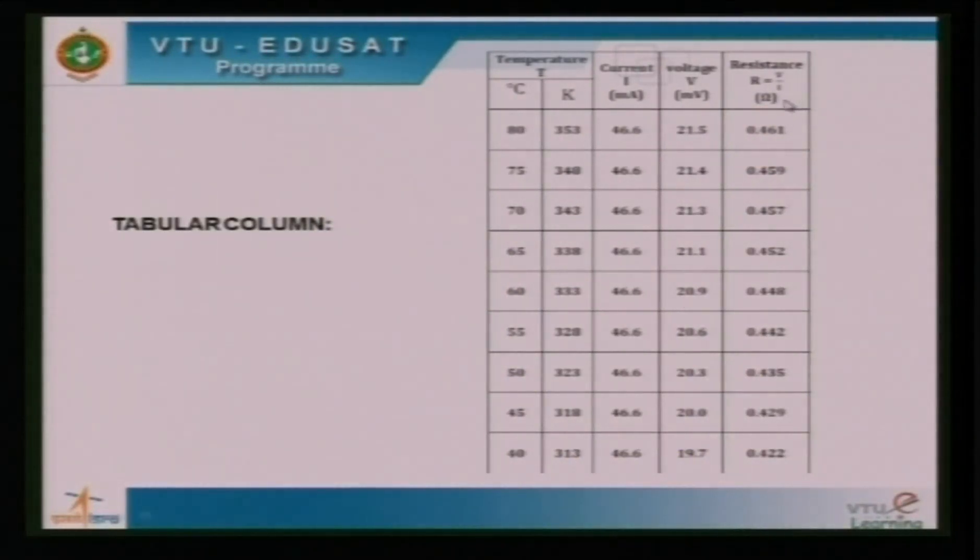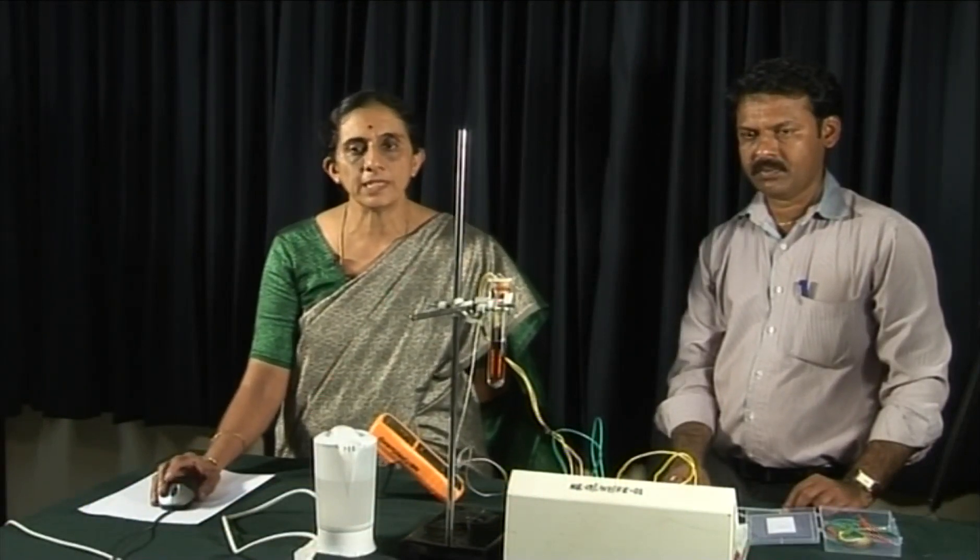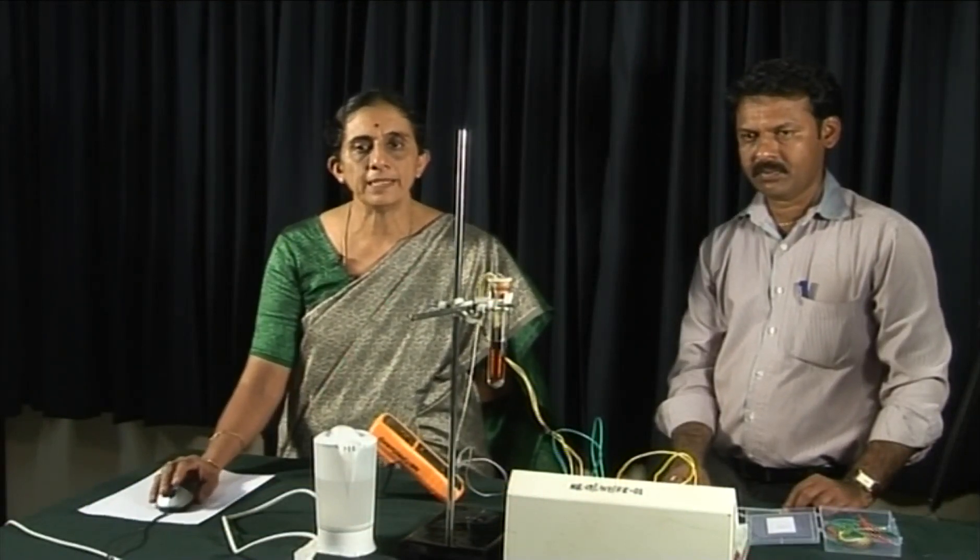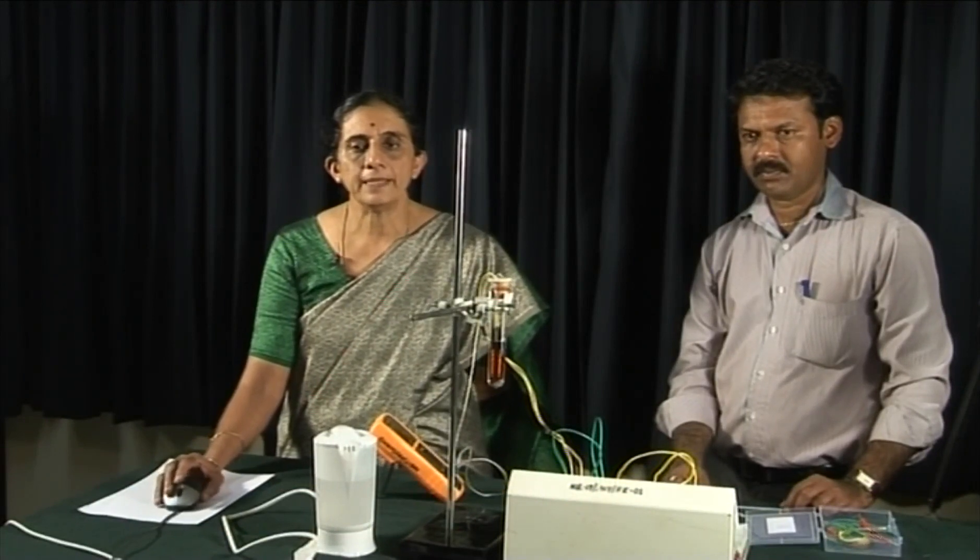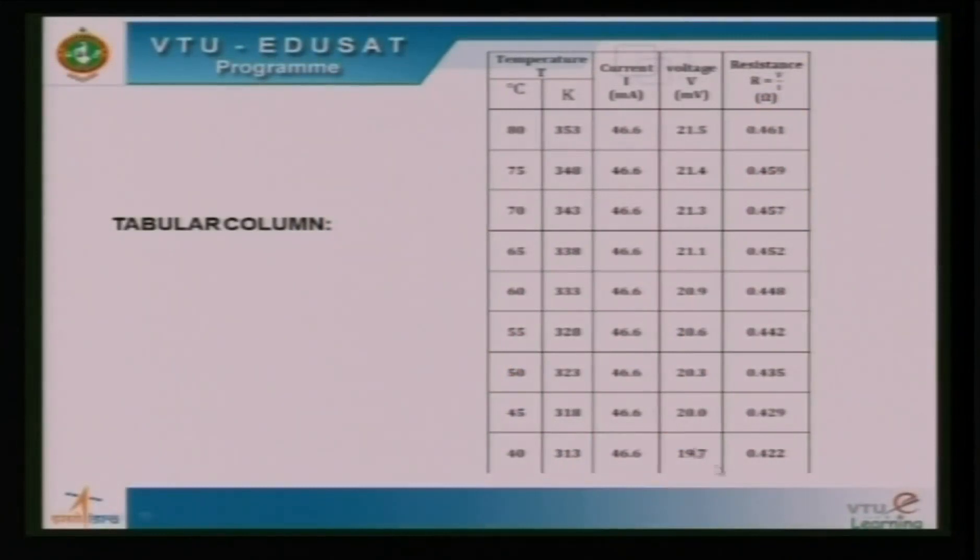We will calculate the value of resistance of the copper coil at various temperatures using simple Ohm's law formula R equals V by I. The resistances are calculated here. Then we will notice that as the temperature decreases, resistance has also decreased.